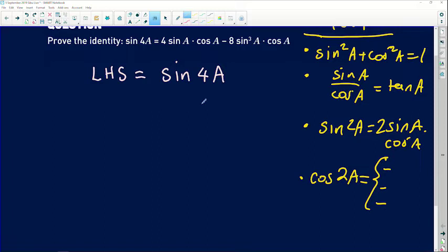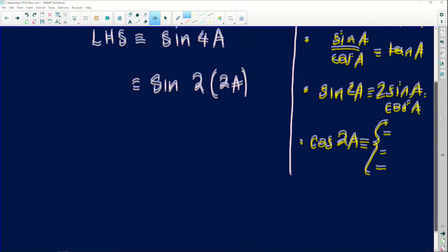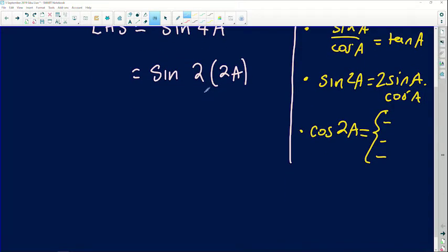Now I see that there's actually a sin 4A on the left-hand side. I'm going to say, okay, this is as good as sin of 2 times 2A. This is where I want to start my argument as I'm trying to simplify this question. If I simplify further, I'm going to use the double angle identity of sine. Sin 2A can be written as 2 sin A cos A.